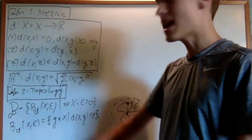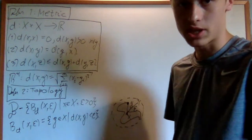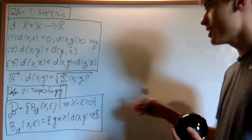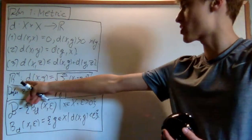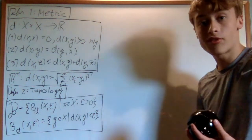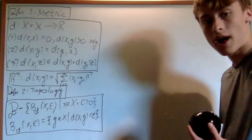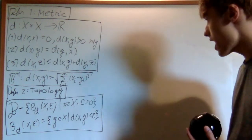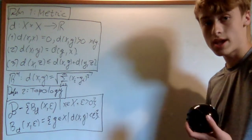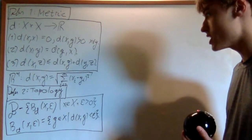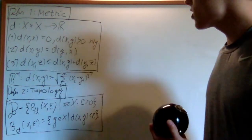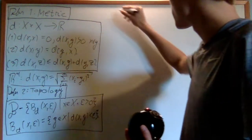Originally we defined the topology on ℝⁿ using this metric, but we also defined it using the product topology. What I'm going to do now is prove that the product topology on ℝⁿ is the exact same topology as what is generated by this metric. First, I'm going to need to use a theorem.